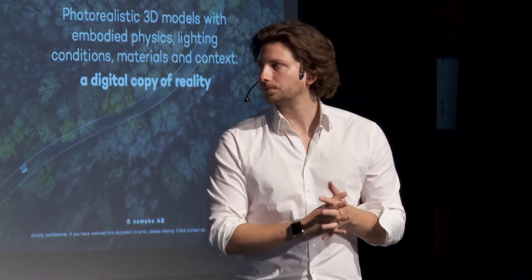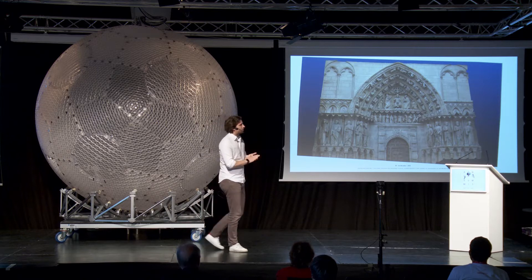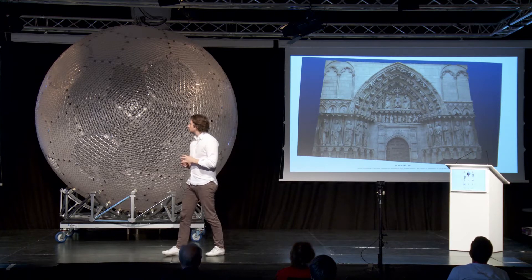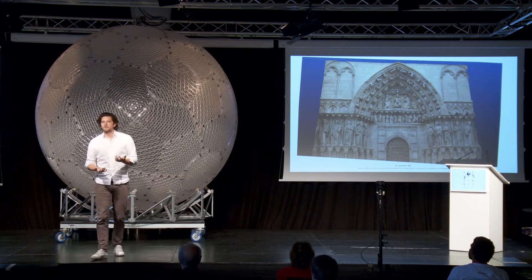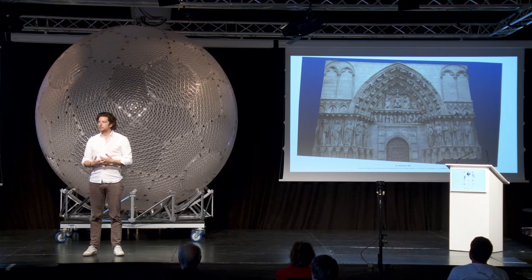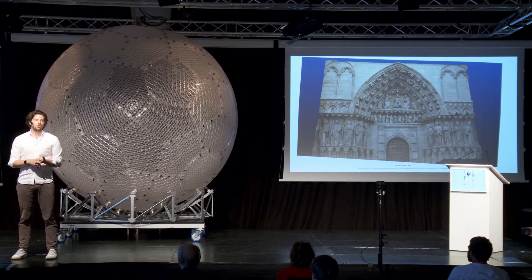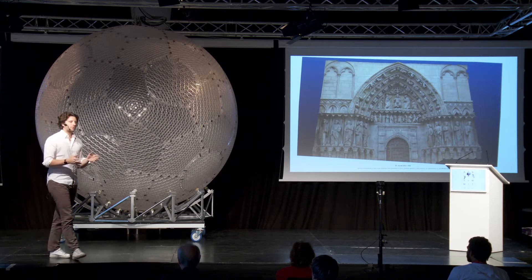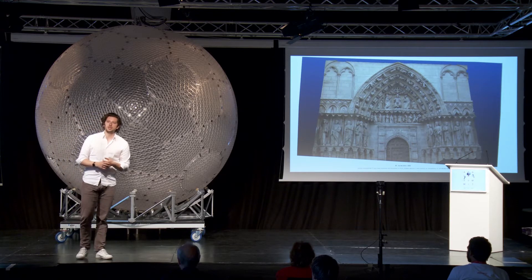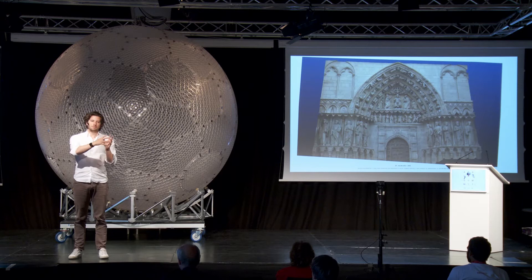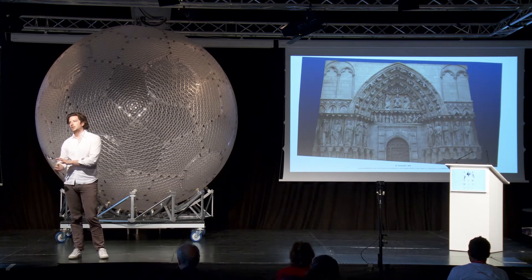When we talk about photorealistic 3D models, this screenshot shows a model rendered from just eight images. We're applying this mainly to outdoor environments and cities because it's more scalable. For a city like Zurich — roughly 100 square kilometers — with 10 drones we can capture that space at centimeter or sub-centimeter accuracy in roughly two hours. With that technology you have a scalability factor to create a digital copy of cities, and eventually the entire planet, very fast.